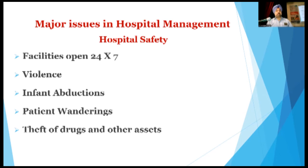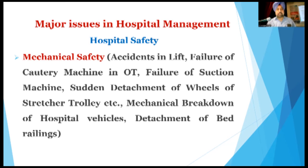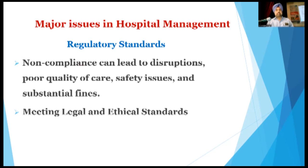Hospital safety concerns include violence, infant abductions, patient wandering, theft of drugs and other assets, and fire safety. Causes of fire include chemicals, medical gases, liquids, anesthetic agents, and sparking from electrical or other equipment leading to damage to patients. Electrical safety issues include short circuits, electrical shock, fire, and disturbances in cold chain maintenance. Mechanical safety issues include accidents in lifts, failure of anesthesia machines and OT equipment, failure of suction machines, detachment of wheels of stretcher trolleys, mechanical breakdown of hospital vehicles, and detachment of bed railings. Hospital safety also encompasses biological safety and radiological safety. Regulatory non-compliance can lead to disruptions, poor quality of care, safety issues, substantial fines, and failure to meet legal and ethical standards.